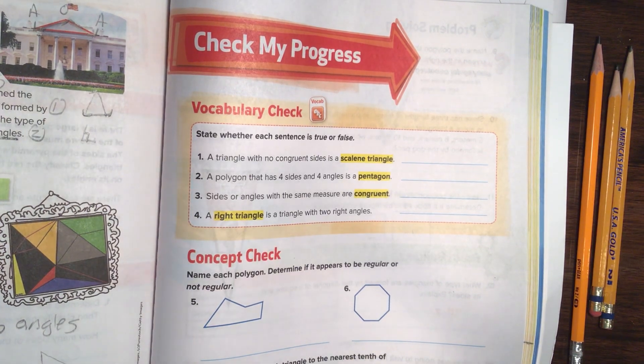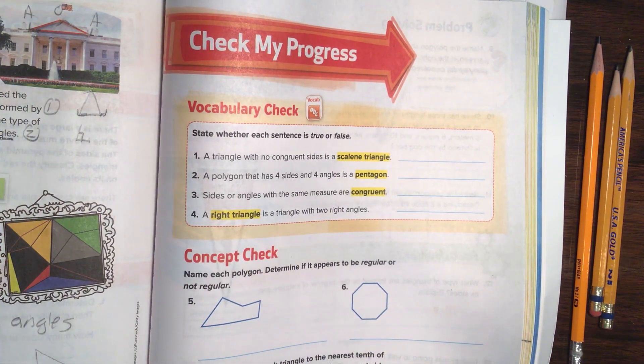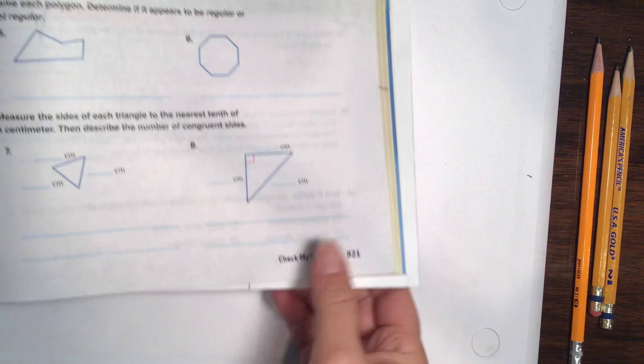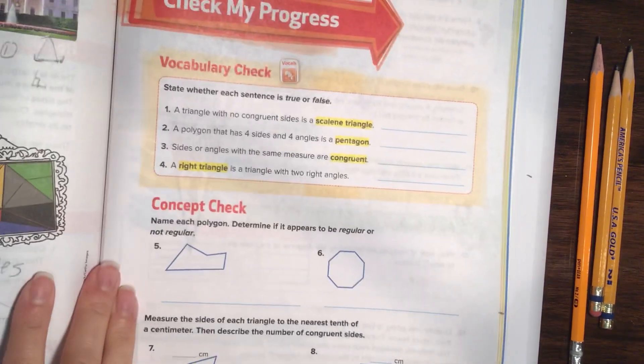Hello, this is Mrs. Cox with 5th grade math. We are working in chapter 12 on the Check My Progress. We are on page 921. Alright, let's dive into this.